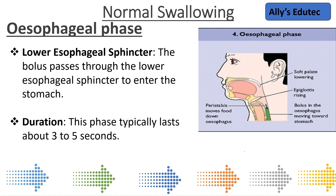In the next session, we will discuss dysphagia — difficulty in swallowing — which is one of the common symptoms occurring in stroke patients. We will see how we can handle and take care of dysphagia in stroke patients. If not managed properly, a common problem that occurs in these patients is aspiration — meaning food is aspirated into the lungs. As discussed, there are two passages, and if not managed properly there is a chance of aspiration, which can lead to different complications for the patient.